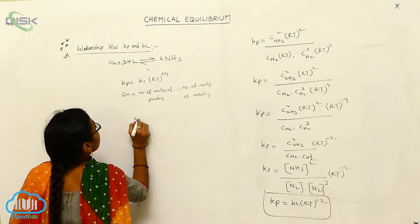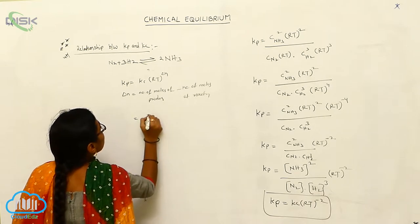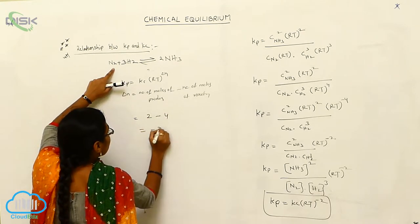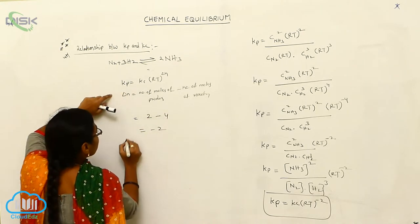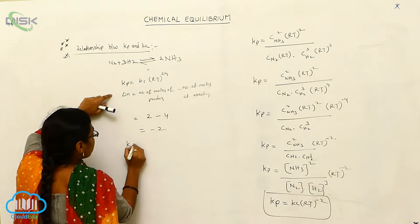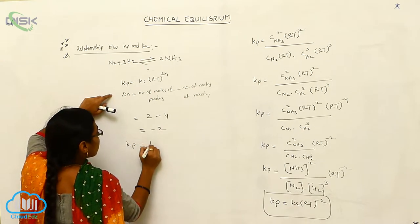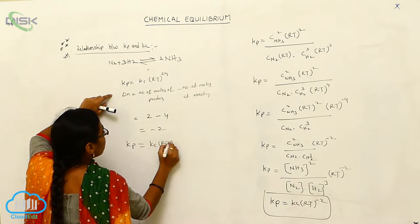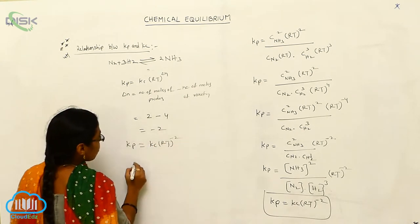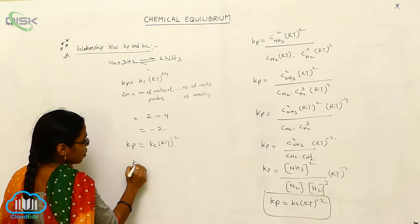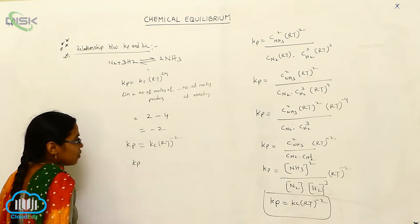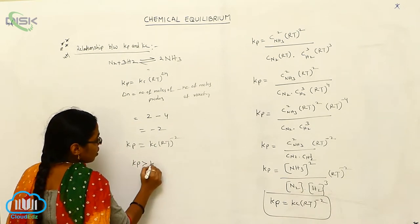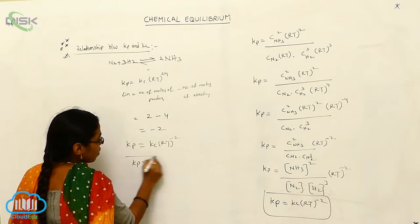The number of moles of products here is 2. From this, you can write that Kp is equal to Kc·RT to the power of minus 2. So from this, we can write that Kp is always greater than Kc.